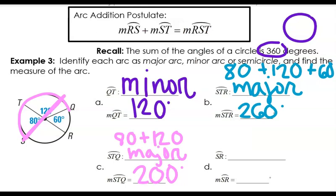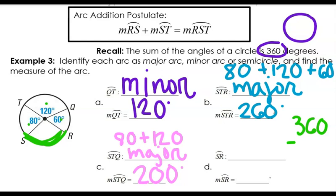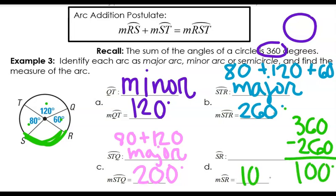Last but not least in this section, let's try and find arc S-R. S-R is this missing piece here. So it's going to be 360 minus all those other pieces — the 80 and the 120 and the 60 — which I already know add up to 260. So I subtract that and I get 100 degrees. The measure of arc S-R is 100 degrees. It's less than half, so it is a minor arc.